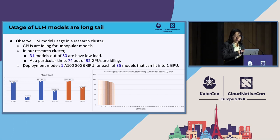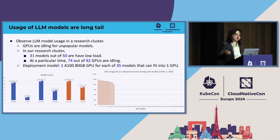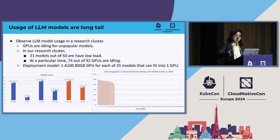If we allocate at least one GPU per model and more GPUs for popular models, we find that with 92 GPUs, at a certain point 74 out of 92 GPUs are idling at a particular time. That's a huge waste of resources and a huge waste of energy.